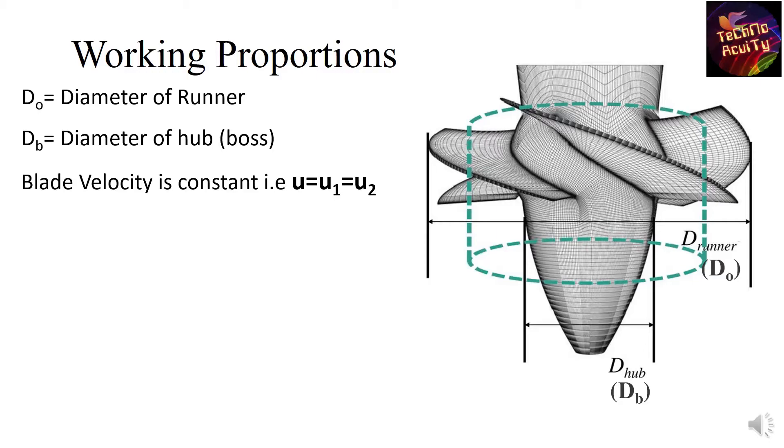For the Kaplan turbine blade velocity remains constant, that is u equals to u1 equals to u2. Also the flow velocity remains constant, that's vf1 equals to vf2 equals to vf.